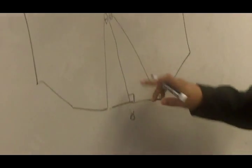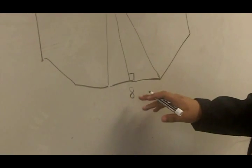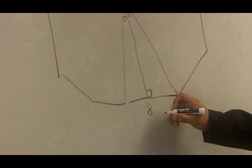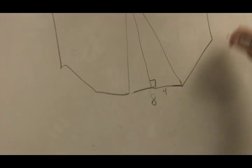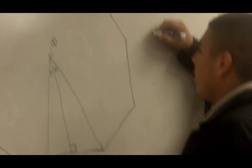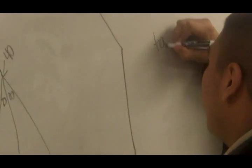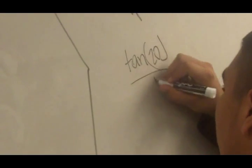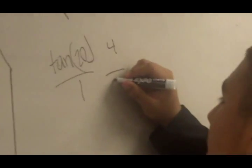So since I'm trying to find the apothem, I already have the whole side. So to find the side of this base, I have to divide it by 2 which equals 4. So then I get the tangent of 20 over 1 and 4 over x.